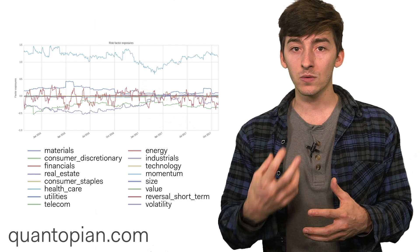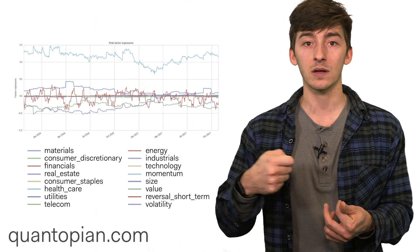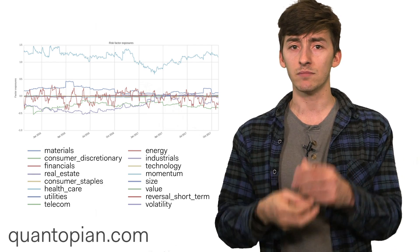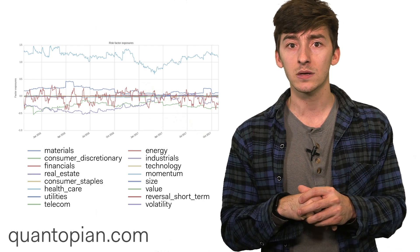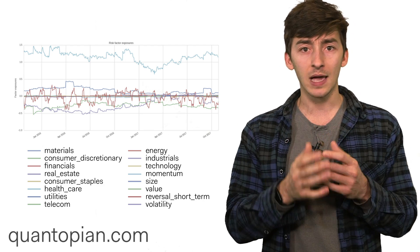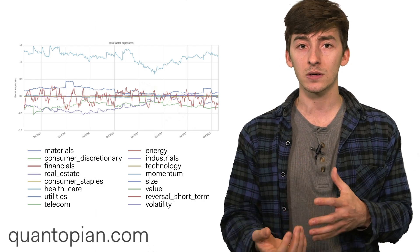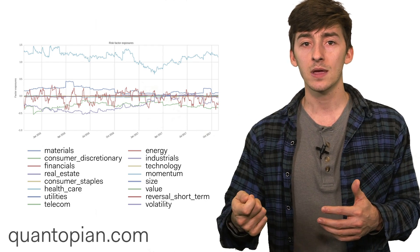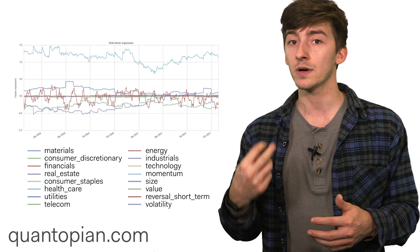Alpha only really makes sense in the context of what our common factor risks are. We have the common notion of market beta, that's one common risk, but we can quantify these however we like. Whatever we are concerned about as an influence in our portfolio, we can add as a common factor risk, and then alpha is what is left over afterwards.